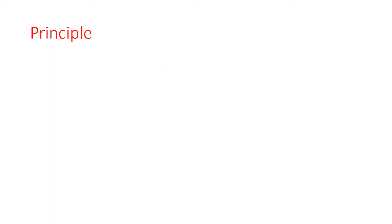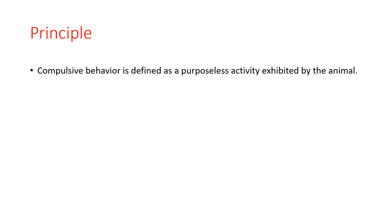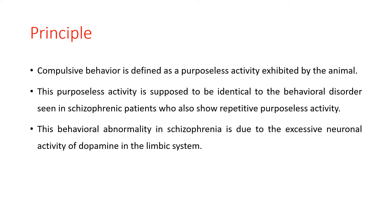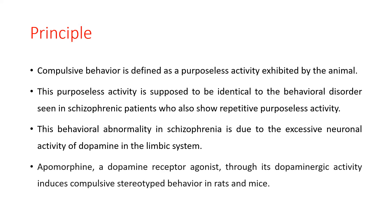Principle for this experiment: compulsive behavior is defined as a purposeless activity exhibited by the animal. This purposeless activity is supposed to be identical to the behavioral disorder seen in schizophrenic patients, who also show repetitive purposeless activity. This behavioral abnormality in schizophrenia is due to excessive neuronal activity of dopamine in the limbic system. Apomorphine, a dopamine receptor agonist, through its dopaminergic activity induces compulsive stereotypy behavior in rats and mice.